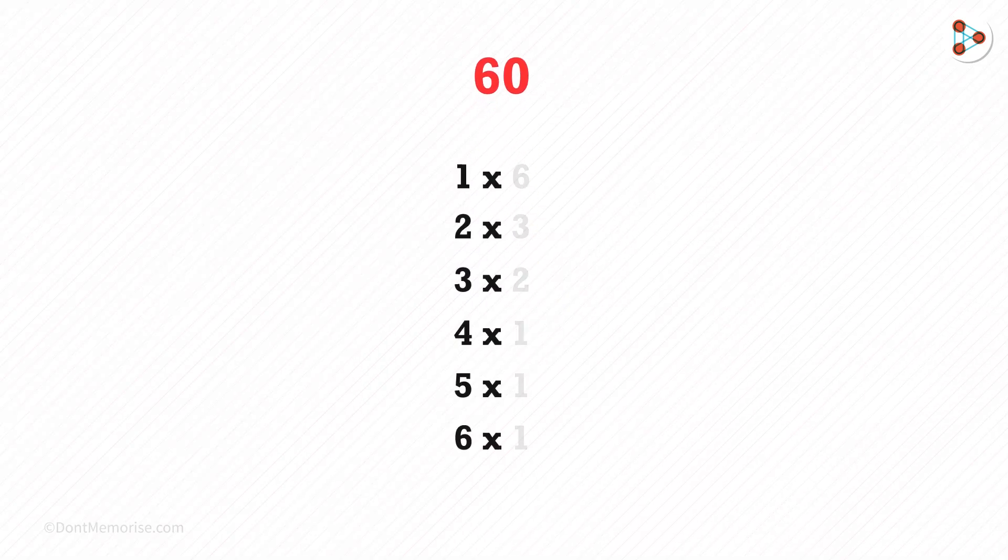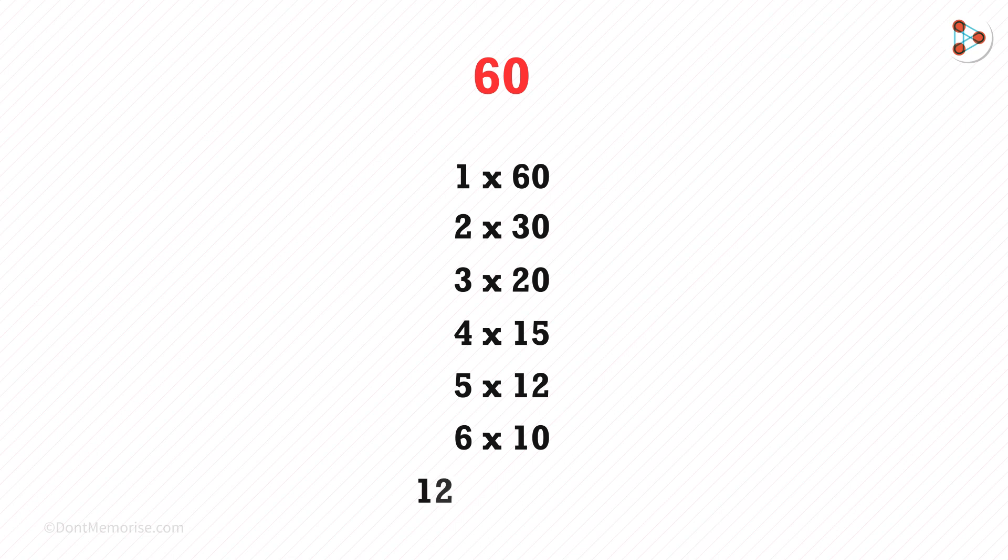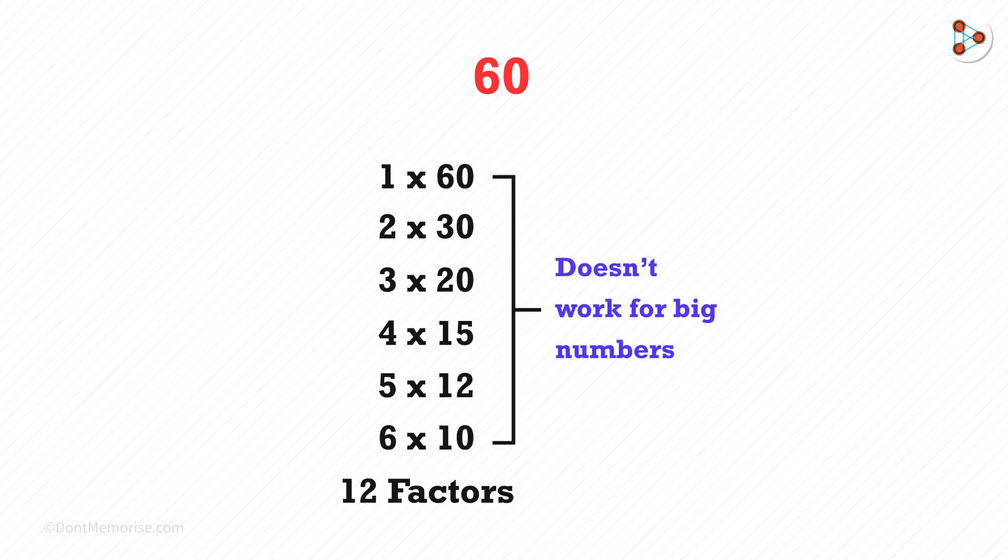When we write it as a product of two numbers we get these options. It gives us a total of 12 factors. But this trick does not work in the case of large numbers.